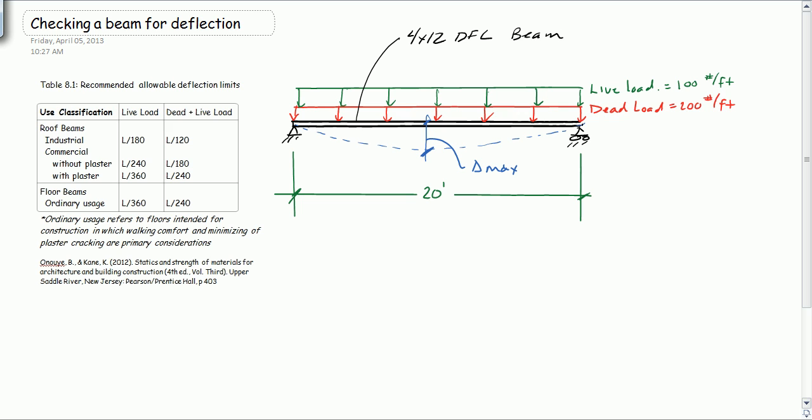Let's assume that this is a floor beam, so our limits for deflection we're going to use these values right over here: live load of L over 360 and dead plus live of L over 240.